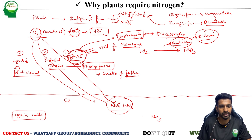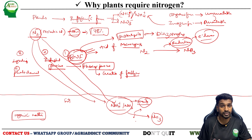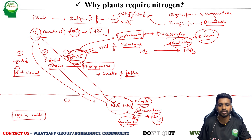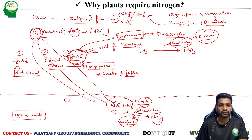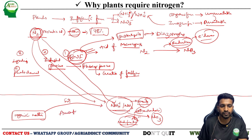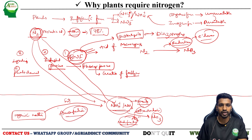This ammonia, since it poses some toxic effect on plants, will be readily converted into nitrate form. The conversion of ammonia or ammonium into nitrate — with the intermediate compound nitrite — is called nitrification. Nitrification is an oxidation process. Biological nitrogen fixation is the reduction process — converting molecular nitrogen into ammonia. Nitrification converts ammonia to nitrate. How is the organic form converted to inorganic form? That is by ammonification.